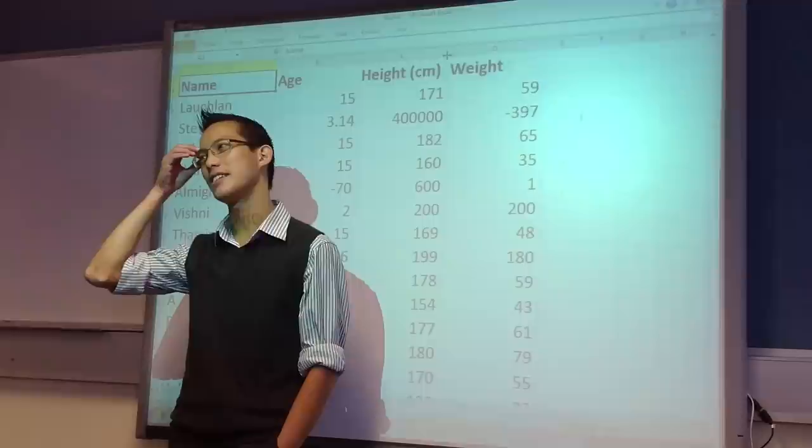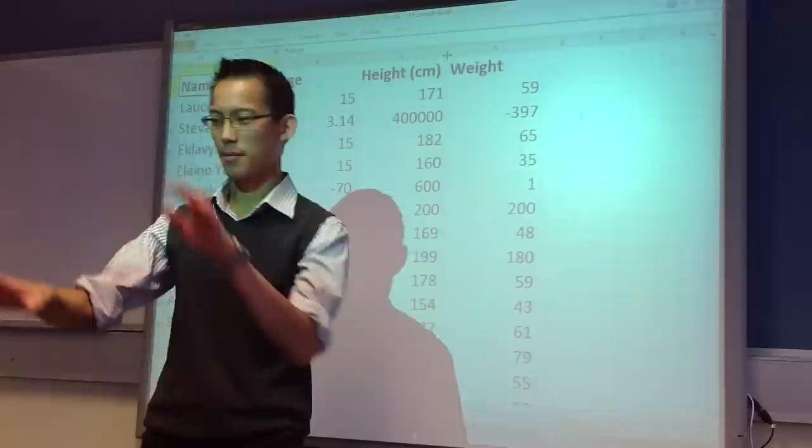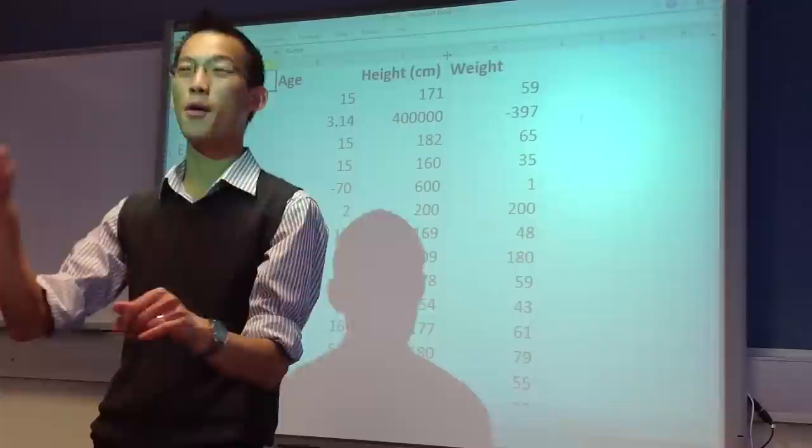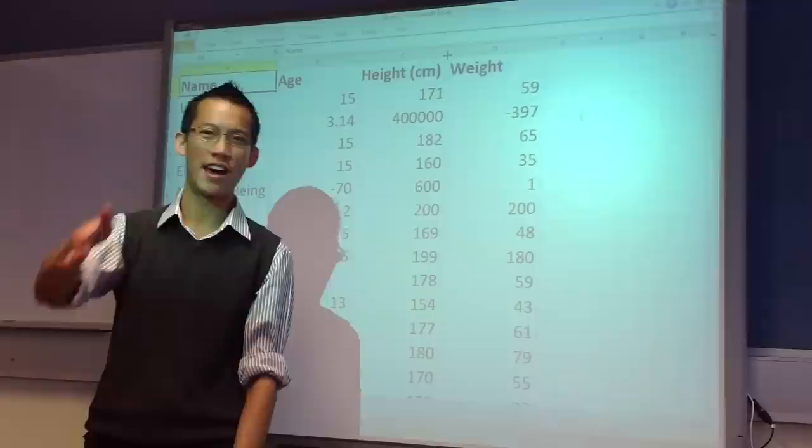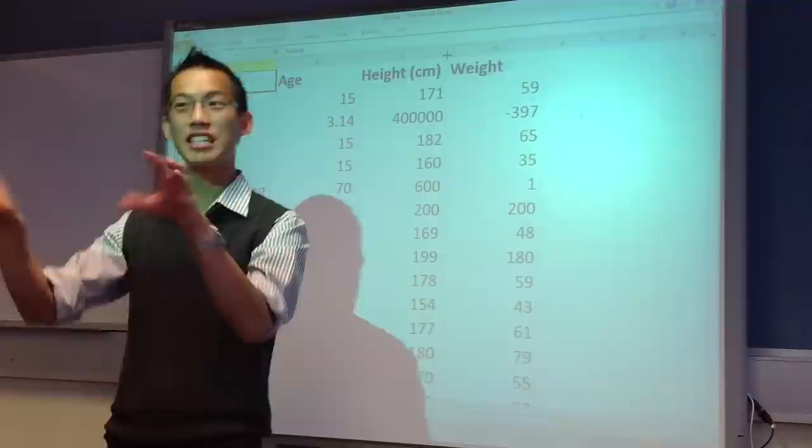There's an experiment where there's two black boxes. And they both display three sets of heads or tails. So it'll be like head, tail, tail. Or head, head, tail. Or tail, tail, tail, and so on. Now both boxes display a series of those.